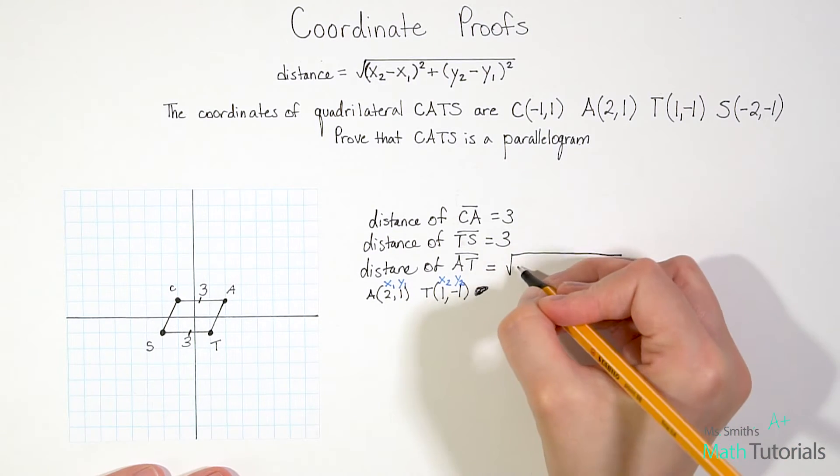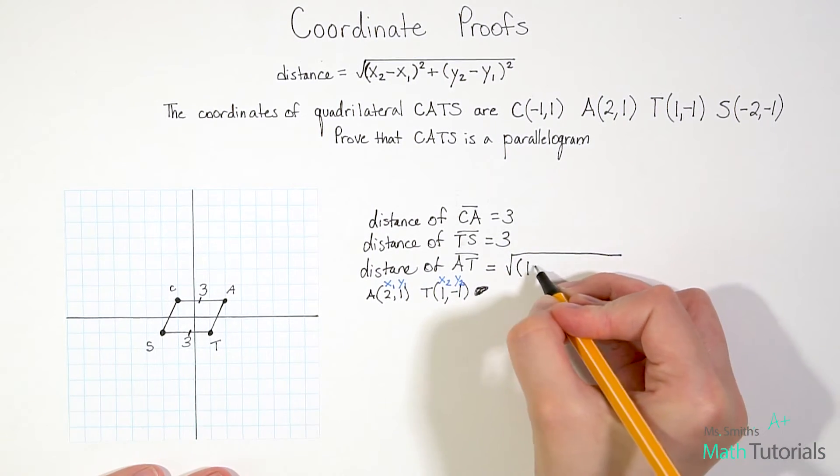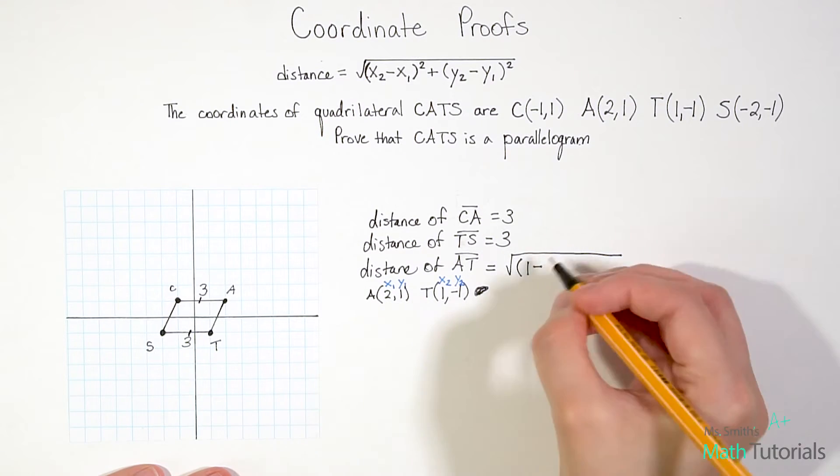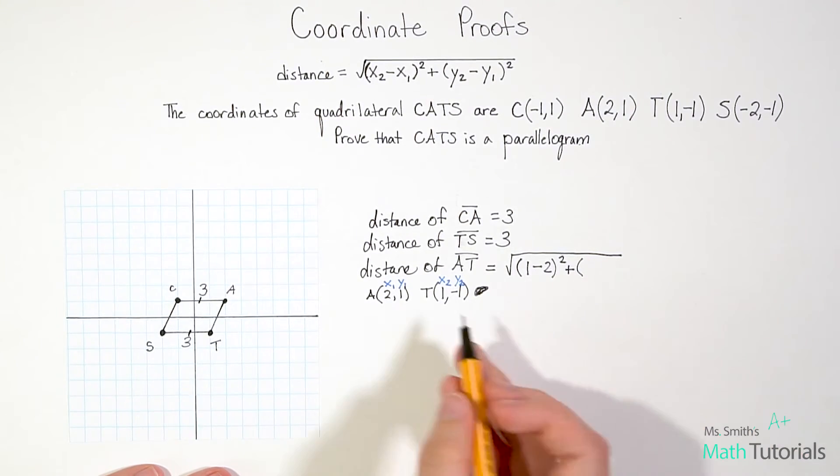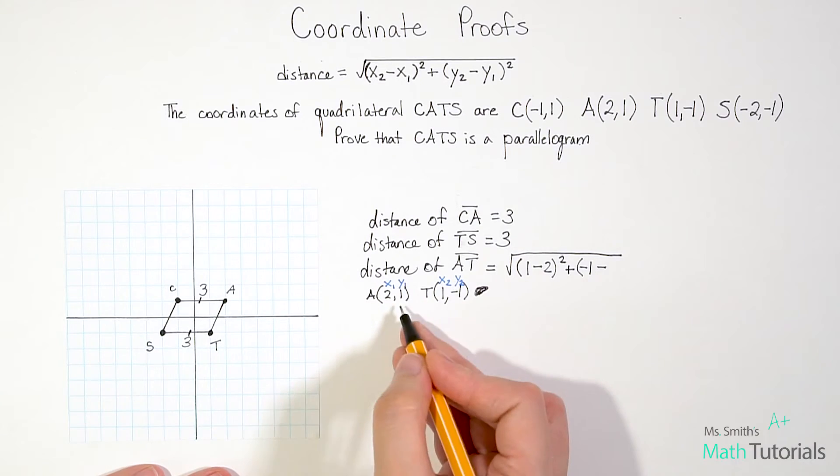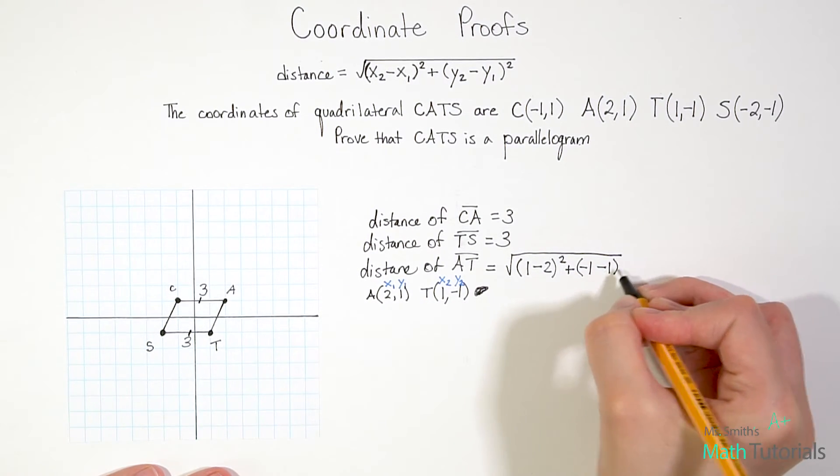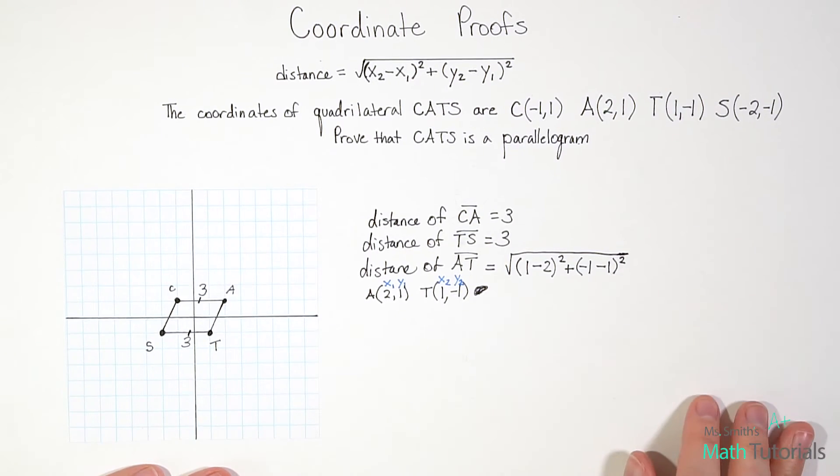So I know I've got the square root of x2, which we're calling 1, minus x1, which is 2, and that's squared, plus y2, which is negative 1, minus y1, which is positive 1, squared. And notice the whole thing is underneath that radical.